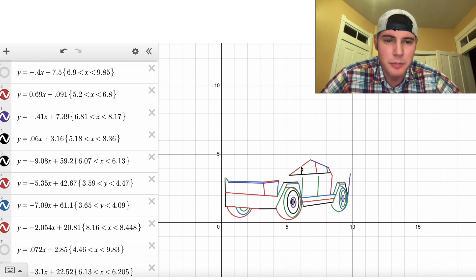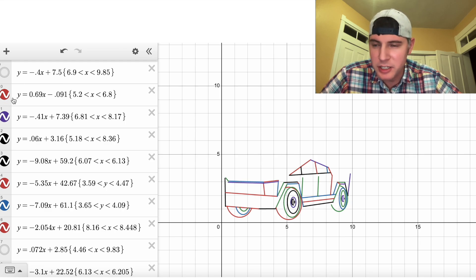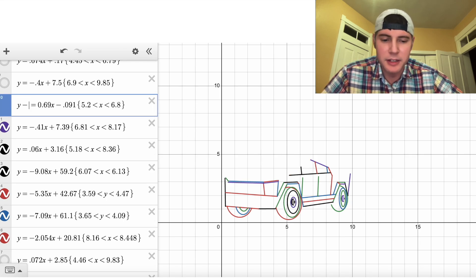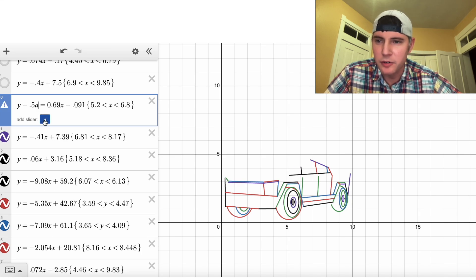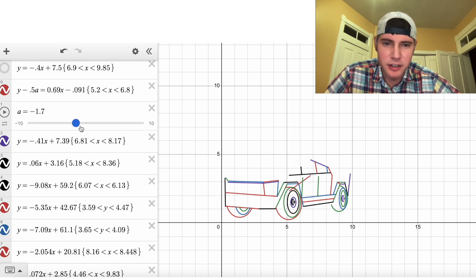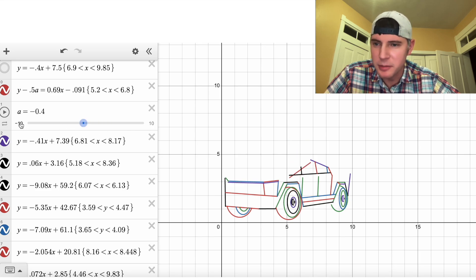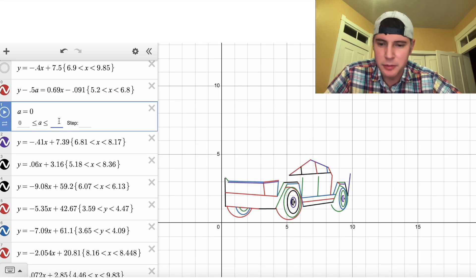There are seven equations that make up these windows. I want all these windows to move up the exact same amount. So next to my Y right here, I'm going to say minus 0.5 A and then we'll add a slider for A. So now as we move the slider, you can see that it goes up and down.